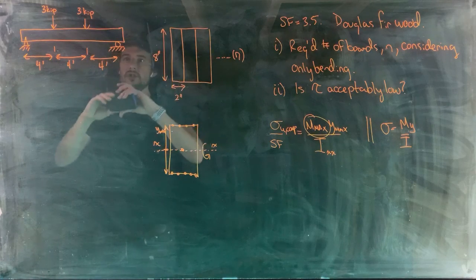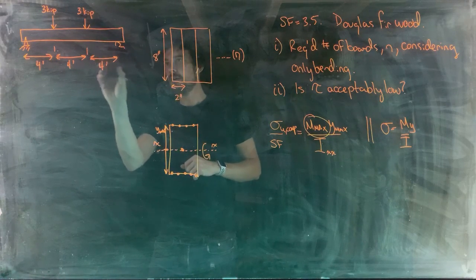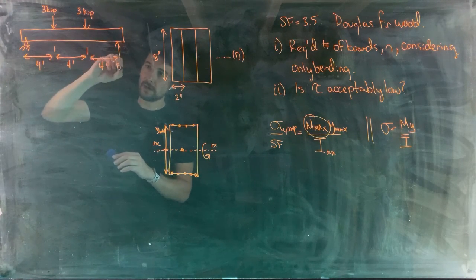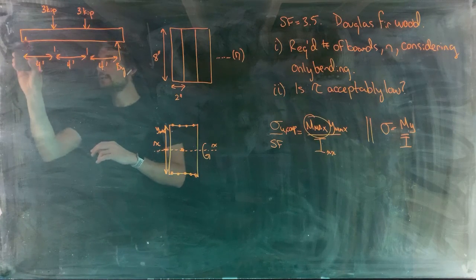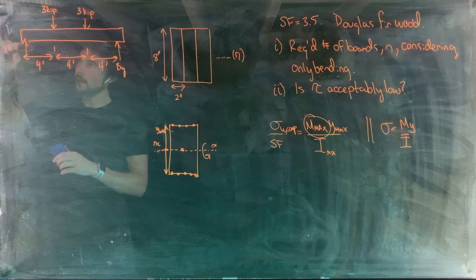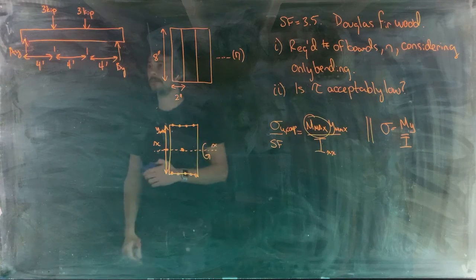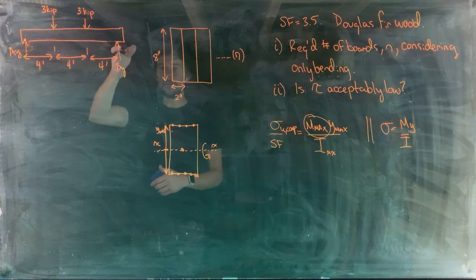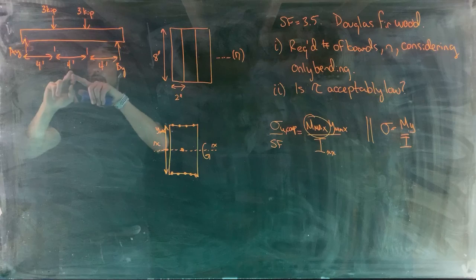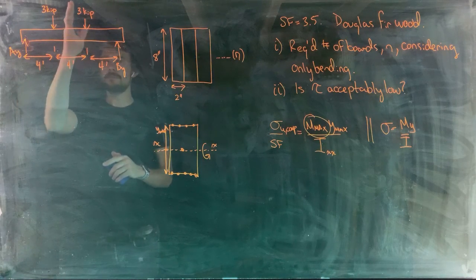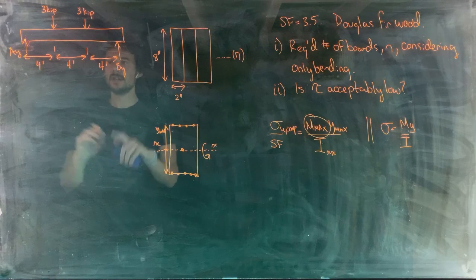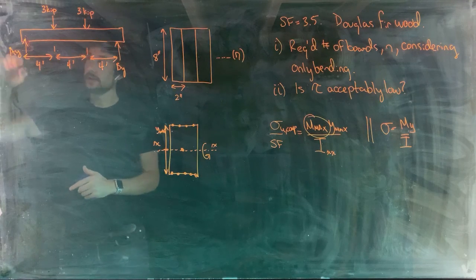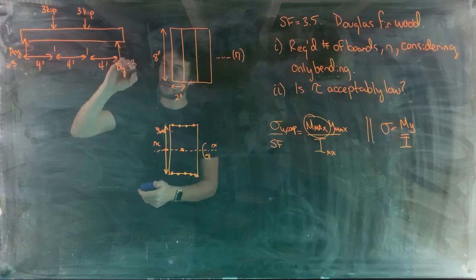Converting to a free body diagram, we replace the roller with support reaction B_y and the pin with A_y. The beam is symmetric about a vertical axis, so A_y and B_y must be equal, meaning they both equal 3 kips.